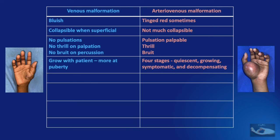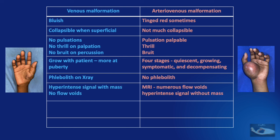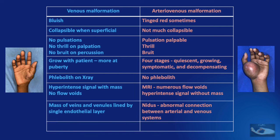Venous malformations grow with the patient and more at puberty. Arteriovenous malformations have four stages: quiescent, growing, symptomatic, and decompensating. Phleboliths on x-ray are characteristic of venous malformations; AV malformations do not show phleboliths. On MRI, venous malformations show a hyperintense signal with mass and no flow voids, whereas AV malformations show numerous flow voids and hyperintense signal without a mass. Pathologically, venous malformations are a mass of veins and venules lined by a single endothelial layer, whereas AV malformations have a nidus — an abnormal connection between the arterial and venous systems.